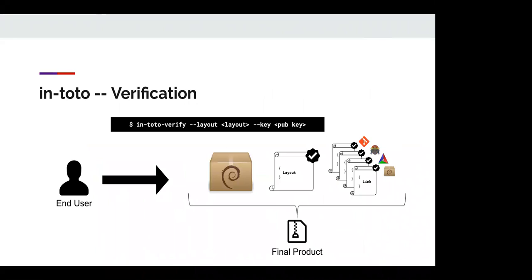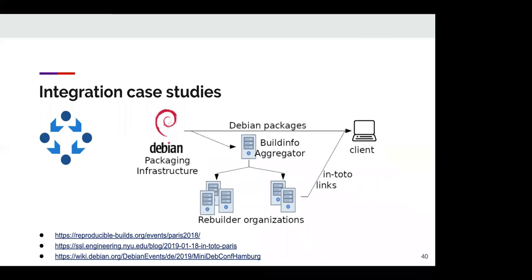During verification, the end user takes the layout, the final artifact, and a series of signed attestations, and walks down the paper trail to verify that all of the operations that were meant to happen actually happened. Let me explain this with some integration case studies. The first is the reproducible builds project, used as part of the Debian and Arch packaging infrastructure, to verify that all packages are reproducible. It's possible to reproduce these packages in different environments and verify that upon installation.